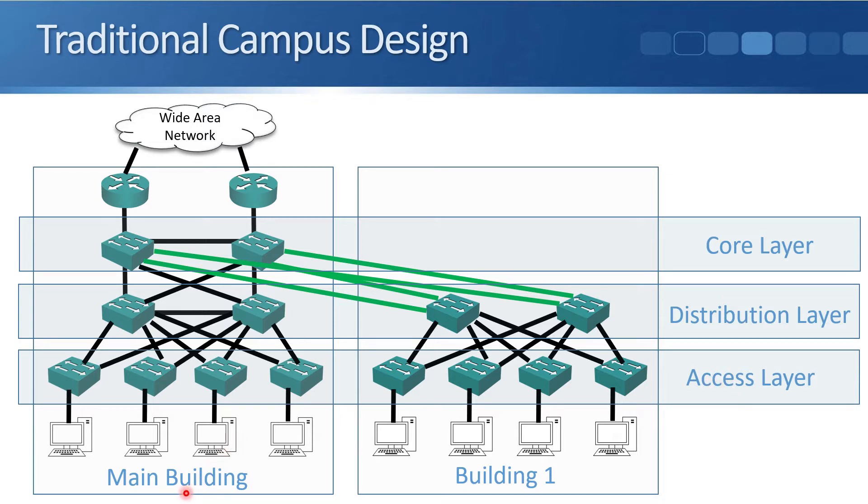In the example here we've got the main building and building one. We could have the main building now actually being a data center with our servers in there. With the old style traditional data center environments, this traditional core, distribution, and access layer would work just fine where we had mostly north-south traffic flows.